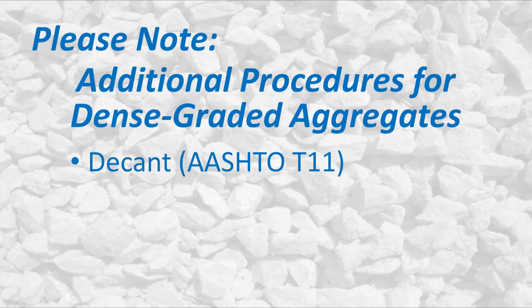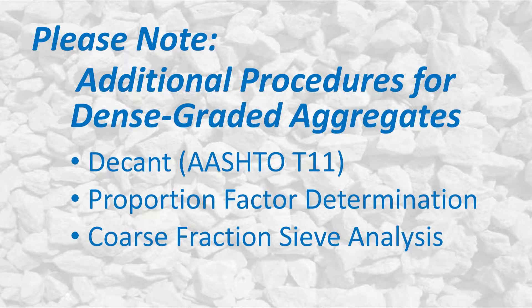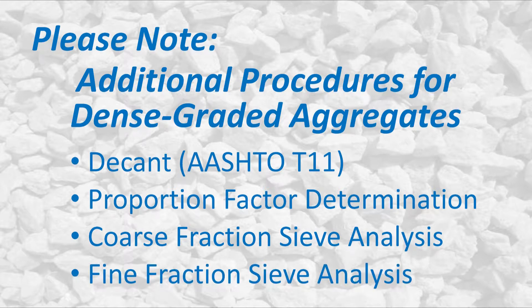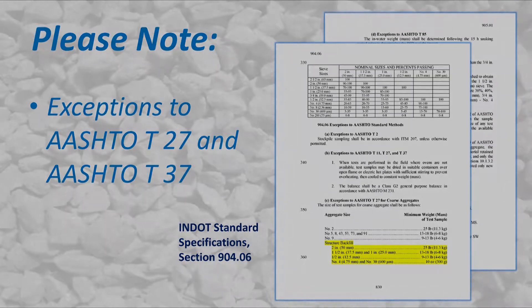The sieve analysis for dense graded number 4353 and number 73 aggregates require some additional steps to this procedure. Exceptions to AASHTO T27 and T37 are listed in Section 904.06 of the INDOT standard specifications.